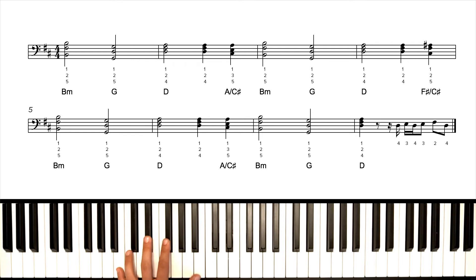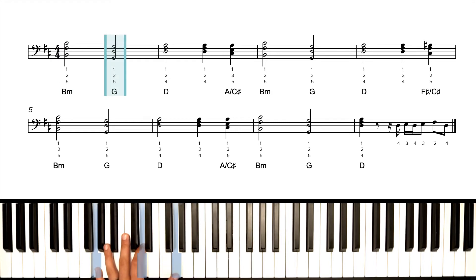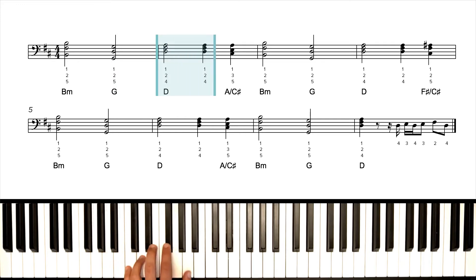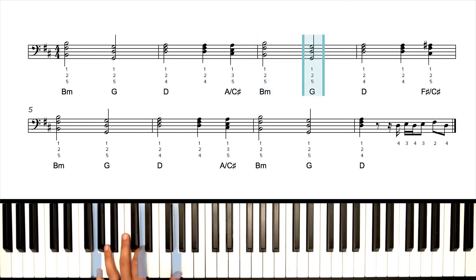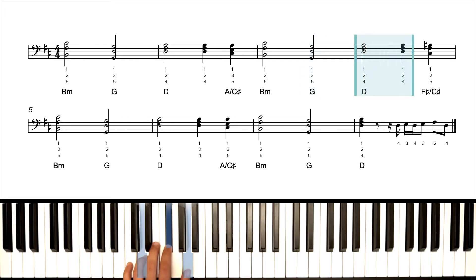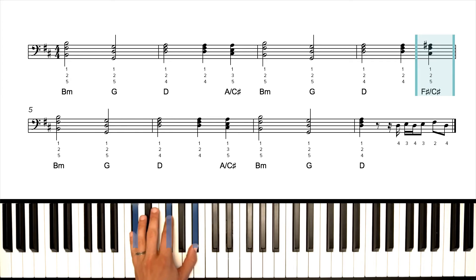We're going to start with a B minor octave and a fifth. And then we're going to move that shape down to a G octave and fifth. Then up to a root position D triad. We're going to do that with our four, two, one fingers. We play another quarter note of the same chord, and then a quarter note of A over C sharp, five, three, one. Then we repeat the cycle. B minor again, G major again, D major root position again. But this time, our final chord is not A over C sharp. It's F sharp over C sharp. And that looks like this.